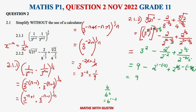So 9 remains as 9. For the middle term: 1 minus negative 2 gives 3, so we have 2 to the power of 3. For the last term: 1 over 5 plus 4 over 5 equals 5 over 5, which is 1, giving 2 to the power of 1. Now we can simplify: 9 minus 8 plus 2. Nine minus 8 is 1, and 1 plus 2 is 3. The final answer is 3.